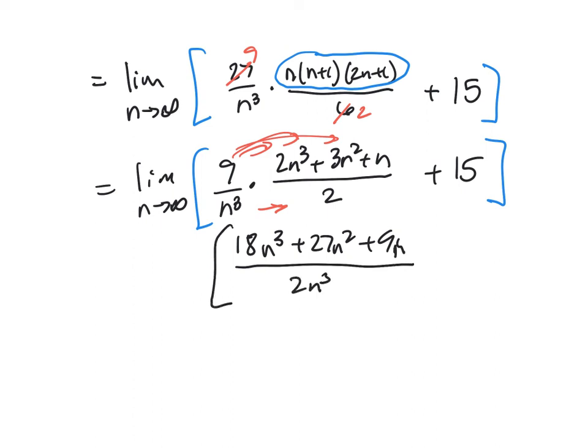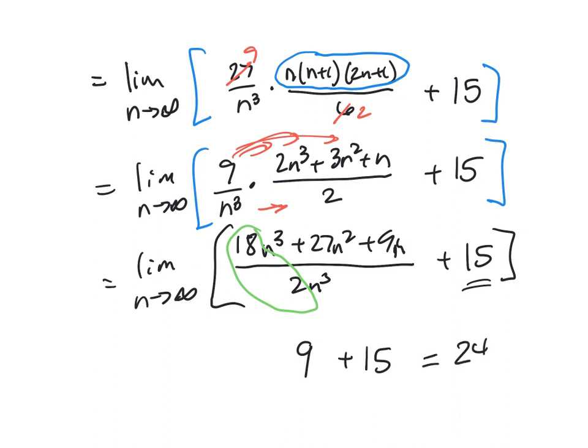And since I'm doing this limit here on this rational function, we've learned that when you're doing the limit as N goes to infinity of a rational function with two polynomials, and the degree is the same, that all we're going to do is just do the ratio of the coefficients. So this part here is 9. And so the limit here is 9. And then the limit on a constant 15 is just 15. And so this adds up to 24 square units.